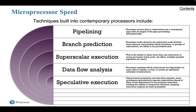First, pipelining. The execution of instructions involves multiple stages of operation, including fetching the instruction, decoding the op code, fetching the operands, performing a calculation, and so on. Pipelining enables a processor to work simultaneously on multiple instructions by performing a different phase for each of the multiple instructions at the same time. The processor overlaps operations by moving data or instructions into a conceptual pipeline with all stages of the pipeline processing simultaneously.